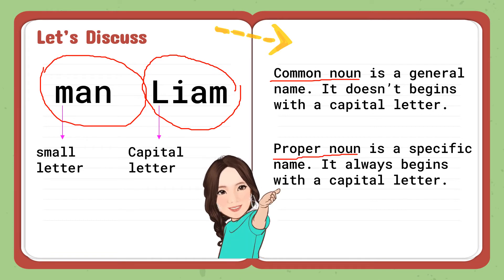A proper noun is a specific name. It always begins with a capital letter. So we have here Liam — Liam is a name of a person and it begins with a capital letter. The difference: a common noun is a general name of a person, place, thing, animal, and event. While a proper noun is a specific name for a person, place, thing, and animal. It always begins with a capital letter.